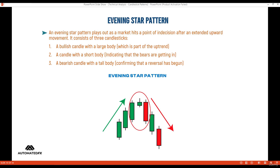Now the other one is the evening star. An evening star pattern plays out as a market hits a point of indecision after an extended upward move. It consists of three candlesticks.